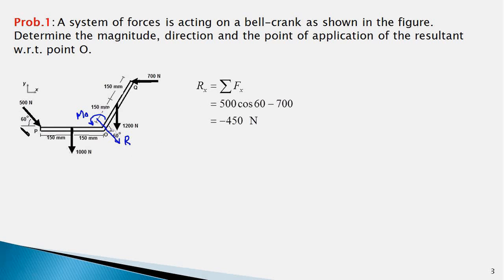The x-component of the 500 N force would be equal to 500 cos 60, which is the first term on the right-hand side of the equation. There is one more force of 700 N which points in the minus x-direction, and hence that term is included. This equation works out to Rx = −450 N.